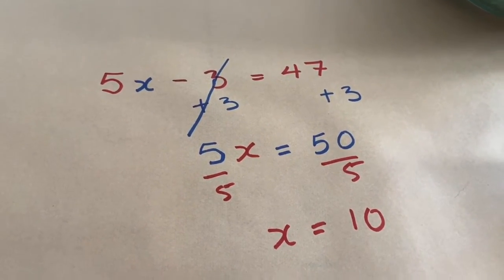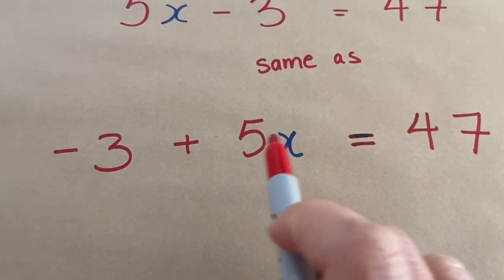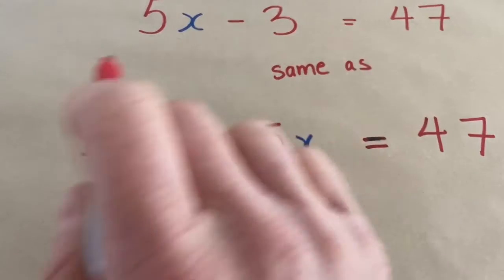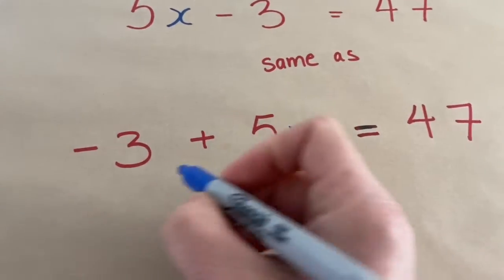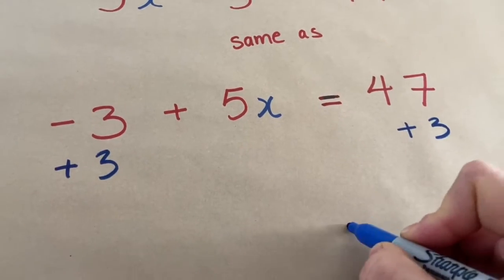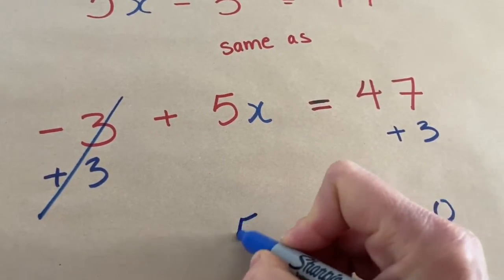Let's do that same work when the question looks like this. This just means I have 5 times x and this negative 3. I want to get rid of the negative 3, so I'm going to add 3. So I get 50, these cancel out, and I have 5x.